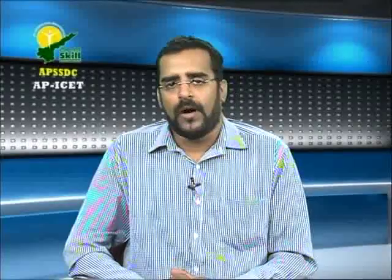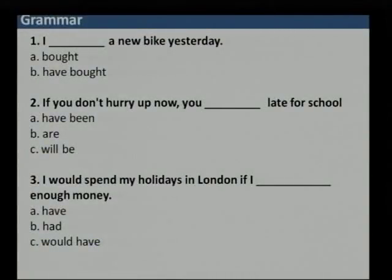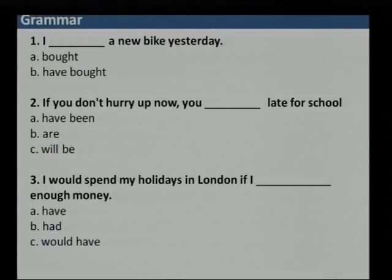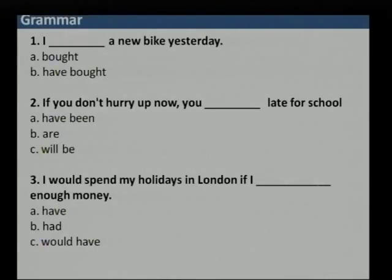So question 1: 'I bought a new bike yesterday.' Question 2: 'If you do not hurry up now, you dash late for school.' 'You have been' means it is past and ongoing. 'You are' is present tense. The sentence implies a future consequence, so option C — 'you will be late' — is the correct answer.